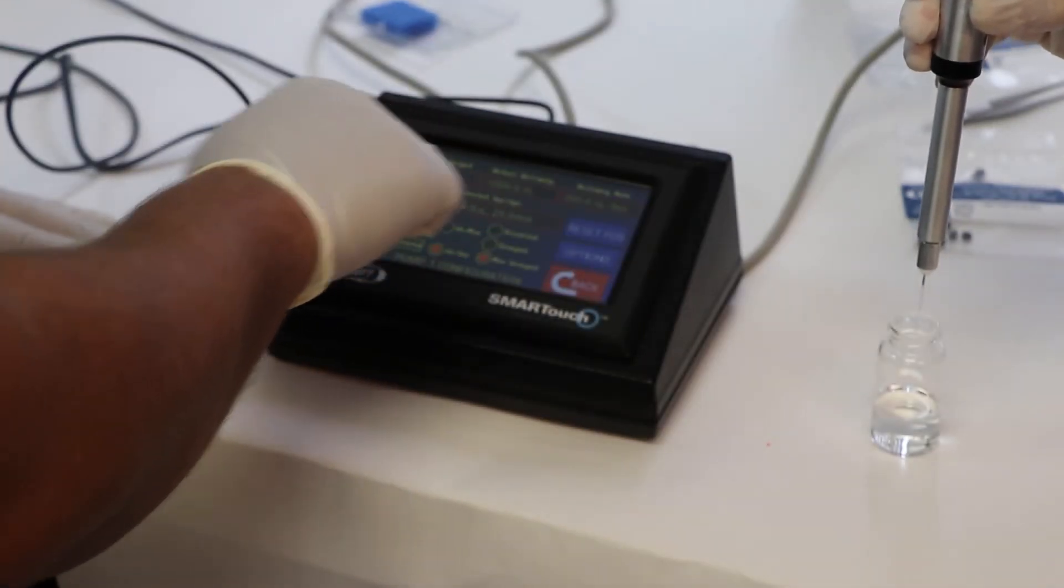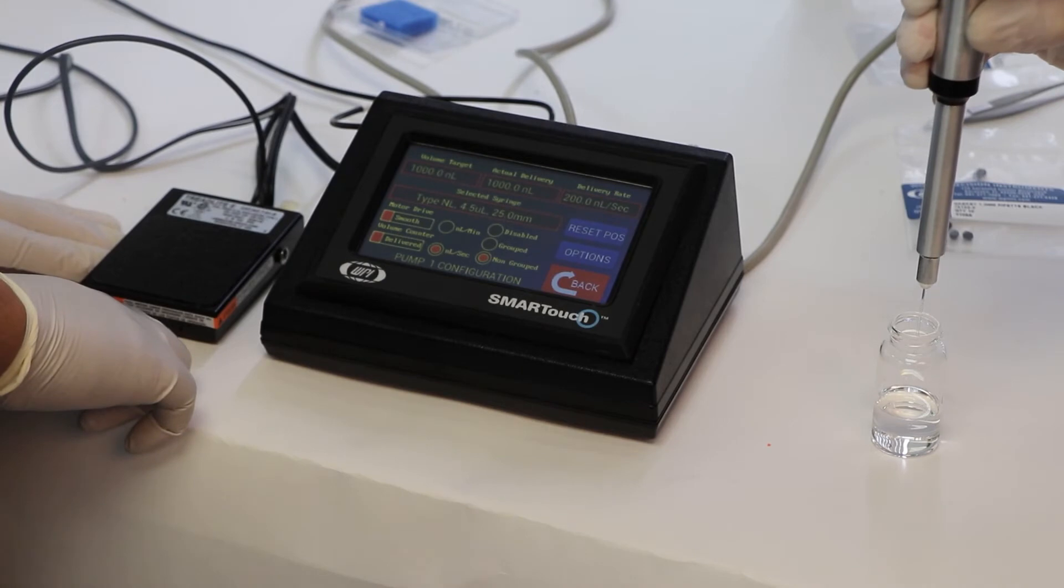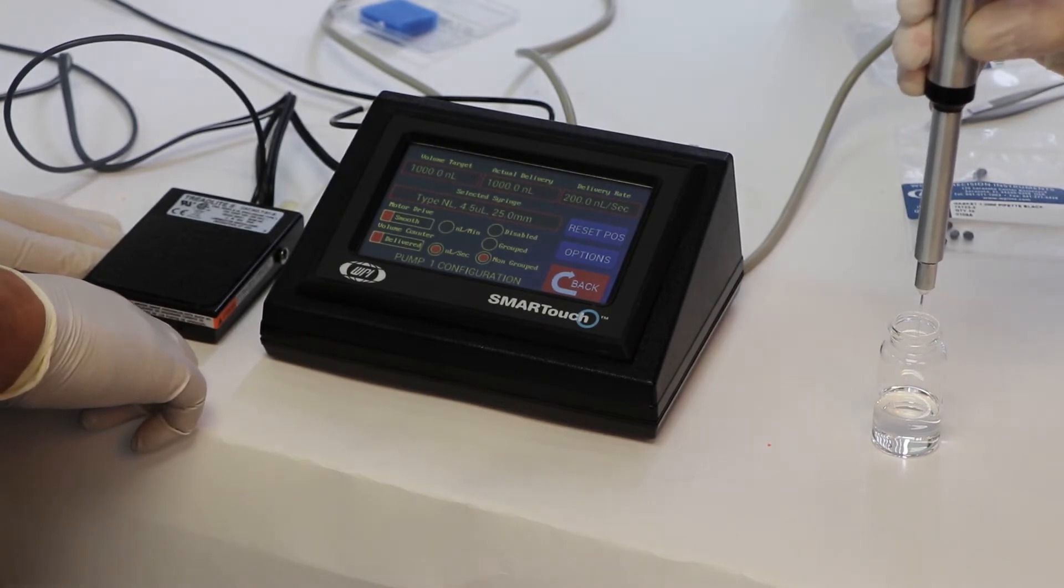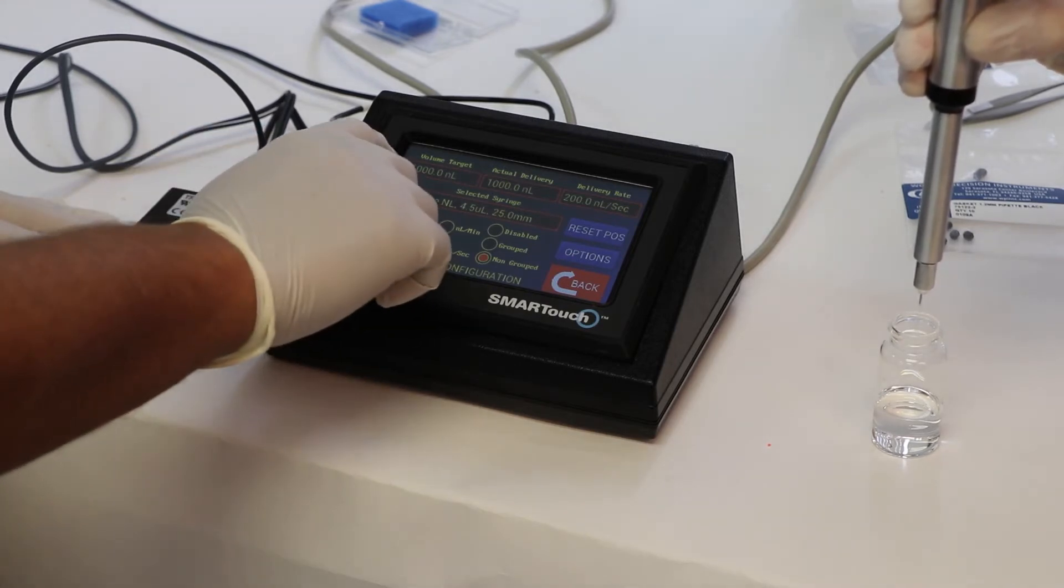So now that we have the glass assembled on the nanometer, the first thing we're going to do is inject the oil out of the glass pipette so that we have room to take the sample.